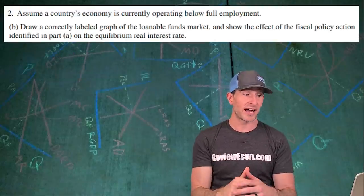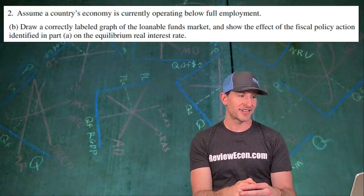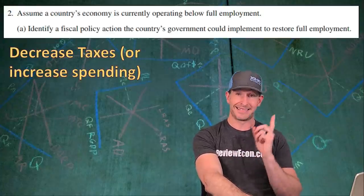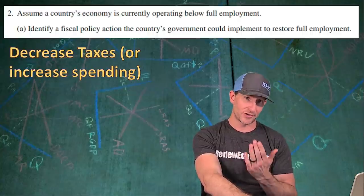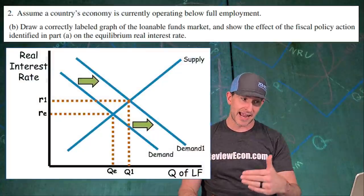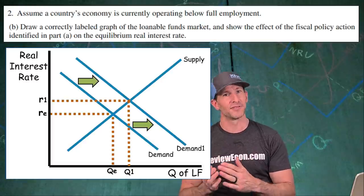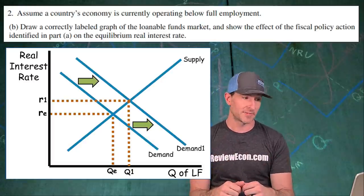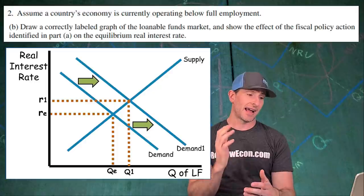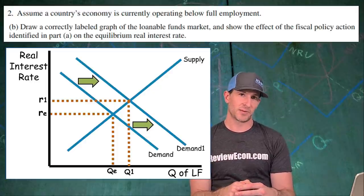For part B, we draw a correctly labeled graph of the loanable funds market and show the effect of that fiscal policy action on the equilibrium interest rate. Since we're decreasing taxes or increasing spending, the government will have to borrow more. As a result, we see the demand for loanable funds increase. You could also decrease the supply of loanable funds — either shift is acceptable — but either shift must drive up that real interest rate in the loanable funds market. I show a shift of the demand curve, increasing the equilibrium real interest rate.